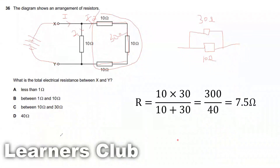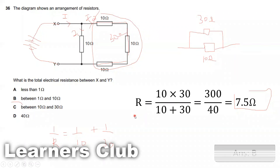Using the parallel resistance formula: 1 over R equals 1 over 10 plus 1 over 30. Taking the LCM and reciprocating gives R equals 7.5 ohms. The answer is B.